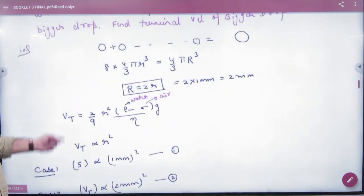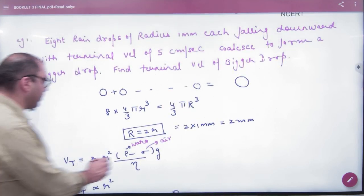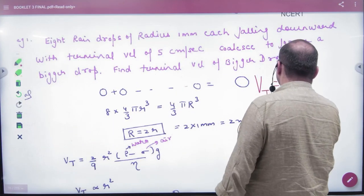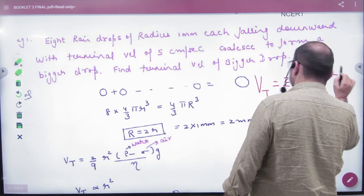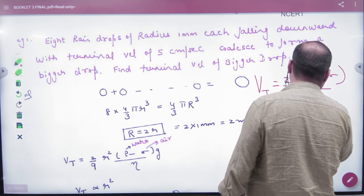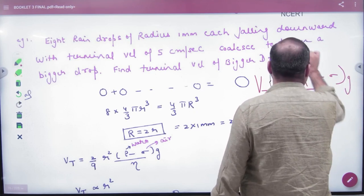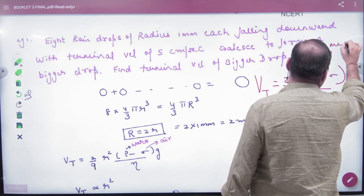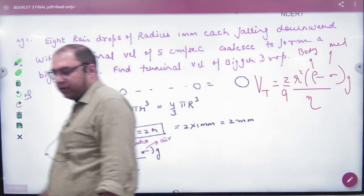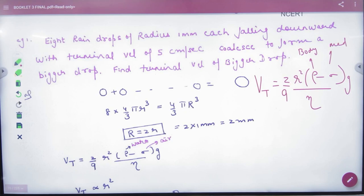The terminal velocity formula is: (2/9)R² × (ρ - σ)/η × g, where ρ is density of body and σ is density of medium. Note this formula.